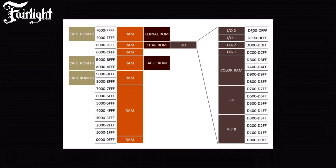And then there's the color RAM. In many of the graphics modes of the C64, the background color of an individual character is stored in this block — from D800 up to DBFF. The block extends all the way to DBFF even though the last few bytes are never displayed as color memory.